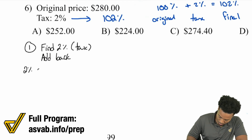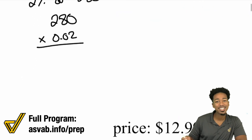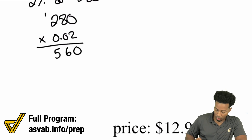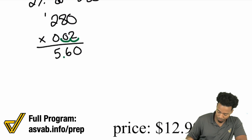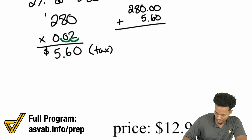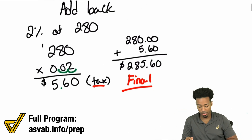To find 2% of $280, we calculate 280 × 0.02 — don't forget to convert percentages to decimals. Working it out: 0×2=0, 8×2=16, 2×2=4 carry the 1 is 5, giving us 560. With two decimal places, the tax is $5.60. We then take $280 and add $5.60 to get $285.60.